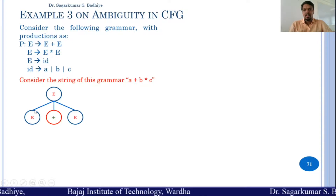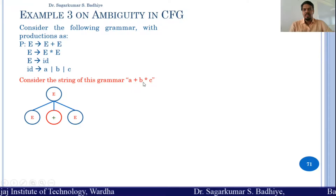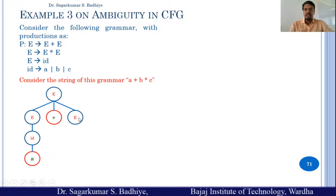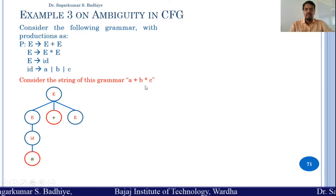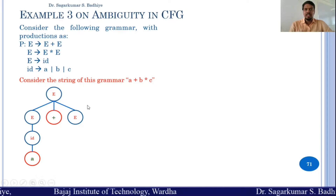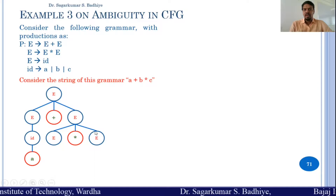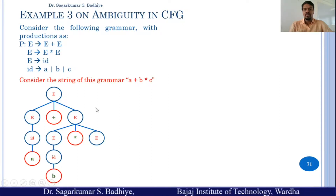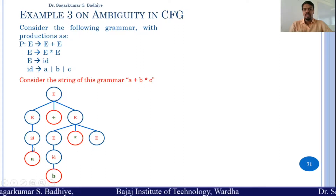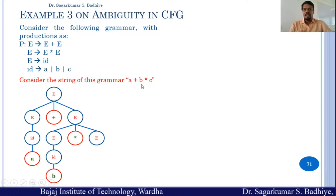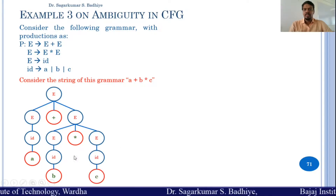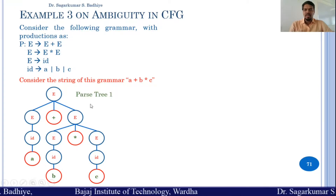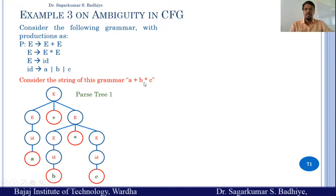This string can be derived as follows (Parse Tree 1): e → e + e; the first e is replaced by id → a; then after the plus, we need b * c, so the second e is replaced using e → e * e; this left e derives to id → b; and the right e derives to id → c. So we have derived a + b * c. This is the first parse tree.